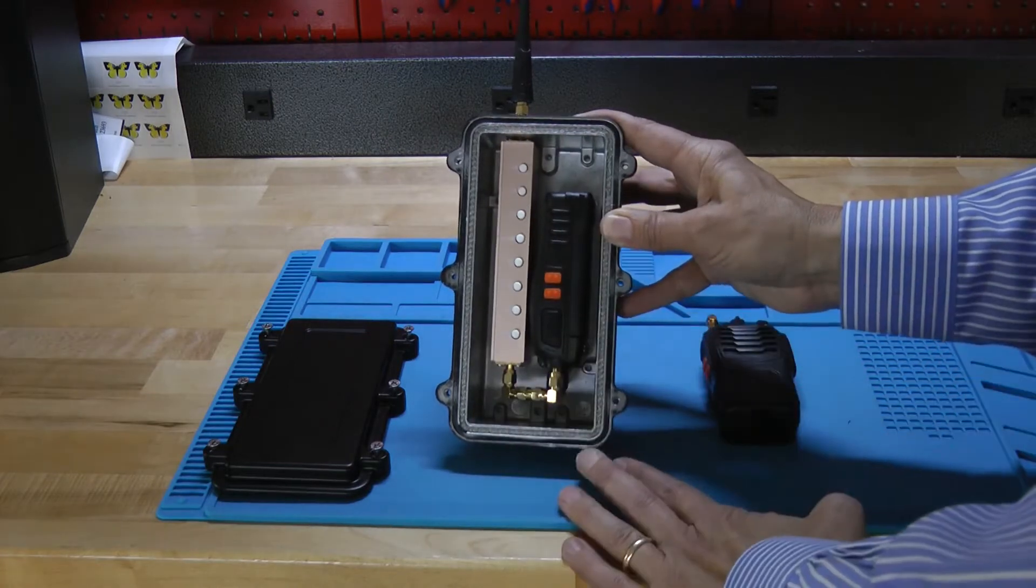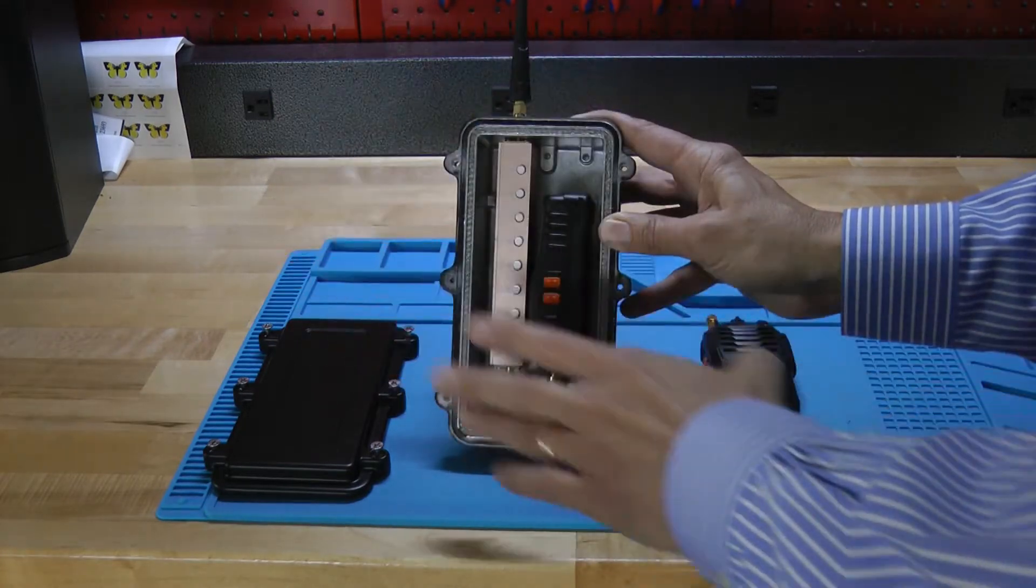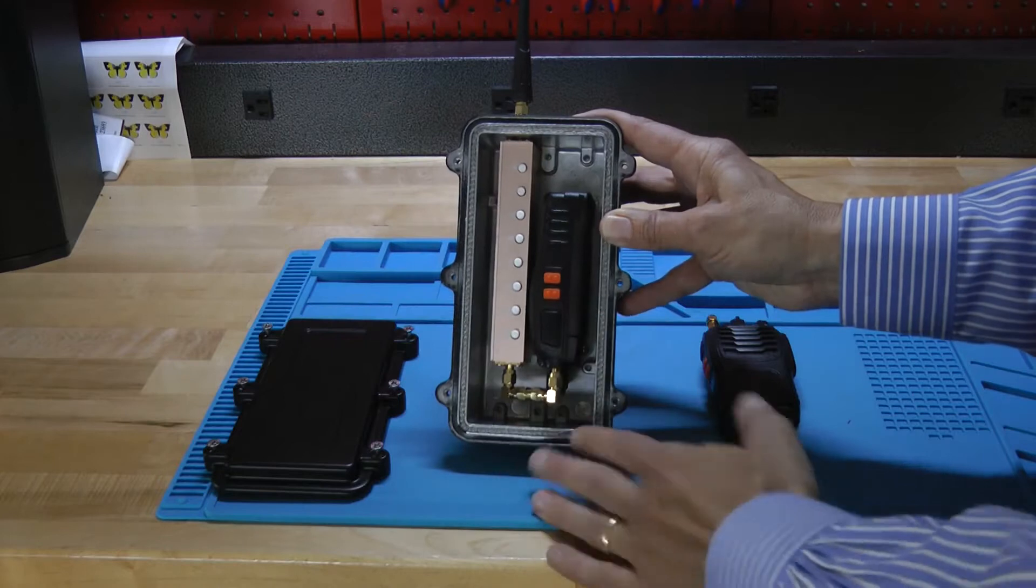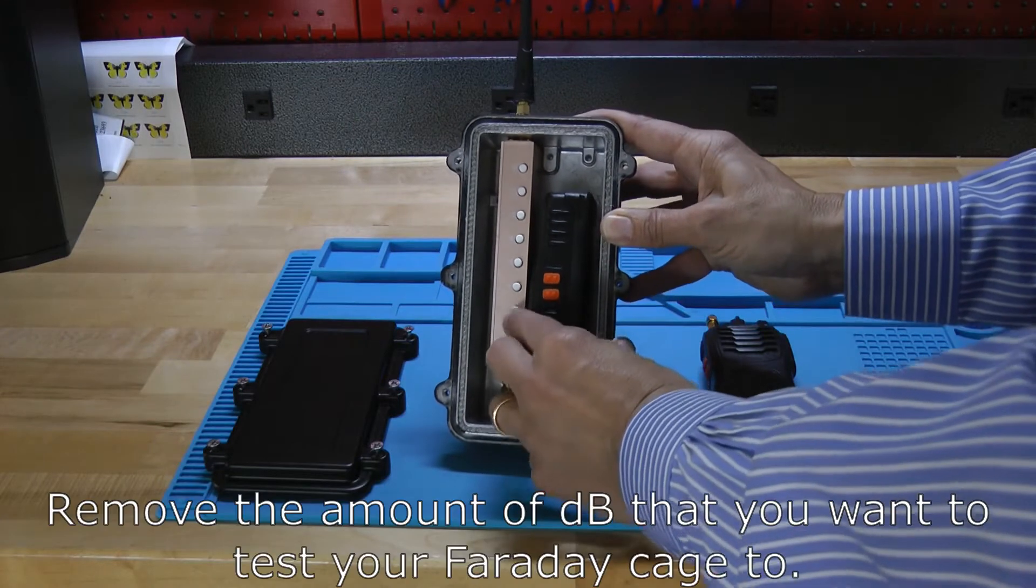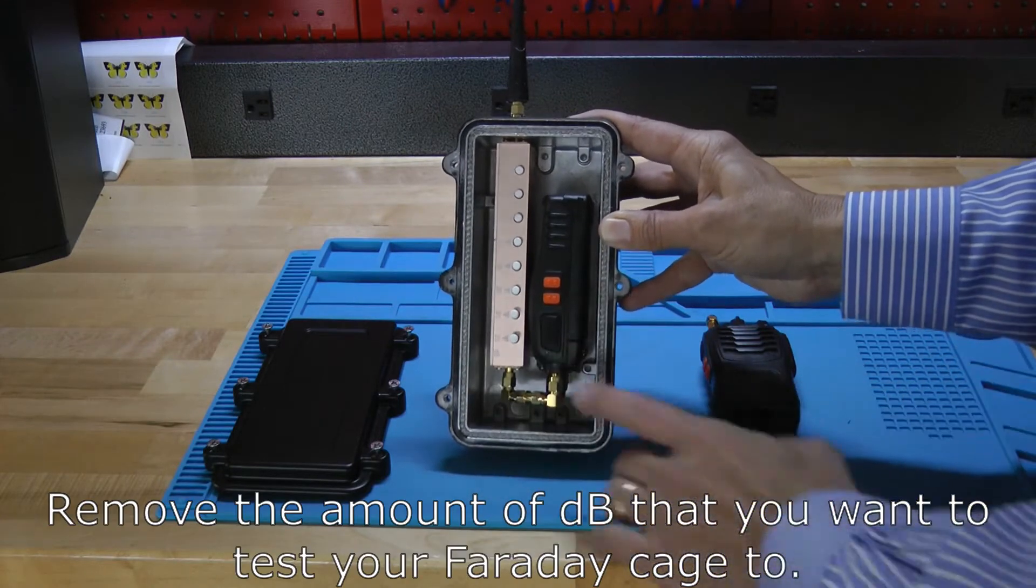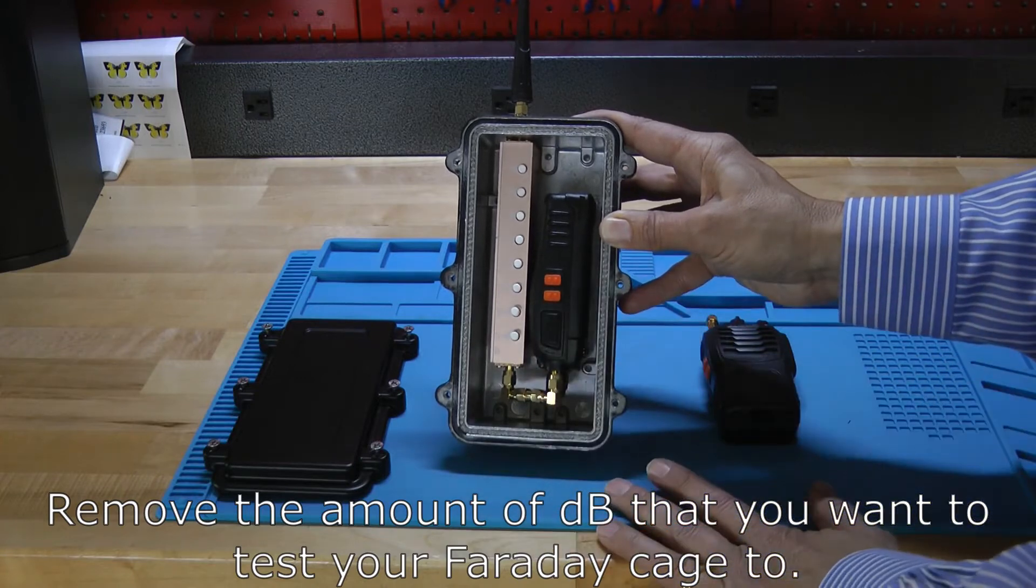So we're going to start with all of them pressed, and then if we want to test the shielding of something, let's say we think something has 40 dB of shielding, that's the amount we remove from the attenuator. So I removed a 20 and a 20 which is 40.